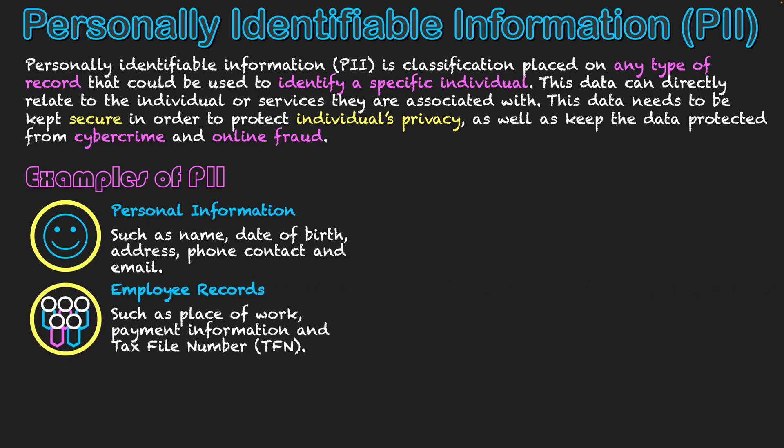The second category is employee records — things your workplace has stored about you. They already have your personal information, but they also have further information such as the address of where you work, your payment information, the bank accounts your pay goes into, and your tax file number for tax purposes. So it's just a bit more related to your payment and place of work.